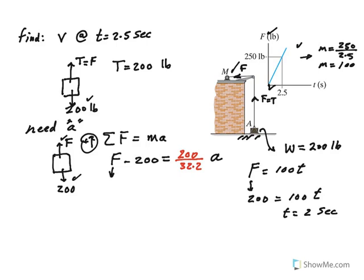F is a function of time: F equals 100t. It's not a constant. So we have 200 over 32.2 times acceleration. If you solve for acceleration in terms of time, manipulate the equation through cross multiplication, and you get 16.1t minus 32.2.